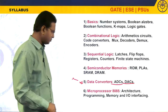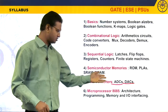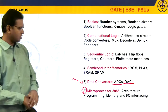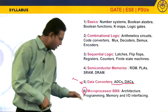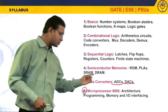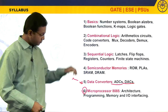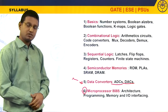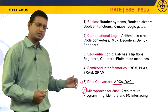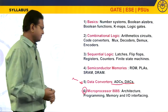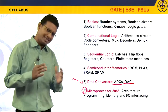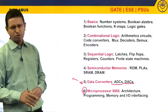Coming to the next part, there are different circuits for each. Now, coming to the microprocessors. First of all, why is this microprocessor present in the digital syllabus? Because microprocessor is a digital device. And generally for the GATE exam, you have the 8085 microprocessor — both for EC as well as EEE you have the 8085 microprocessor.